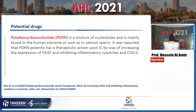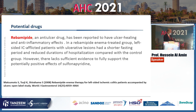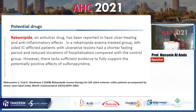Polydeoxyribonucleotide, a mixture of nucleotides, is another agent that can be used for treatment. Rebamipide, an anti-ulcer drug, is also one of the medications that can be used in patients with ischemic colitis.